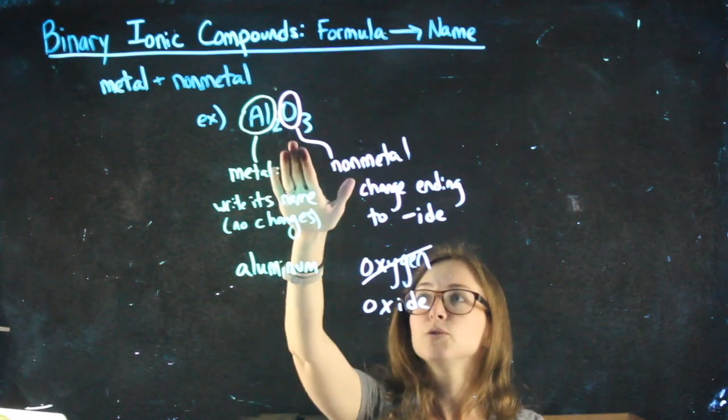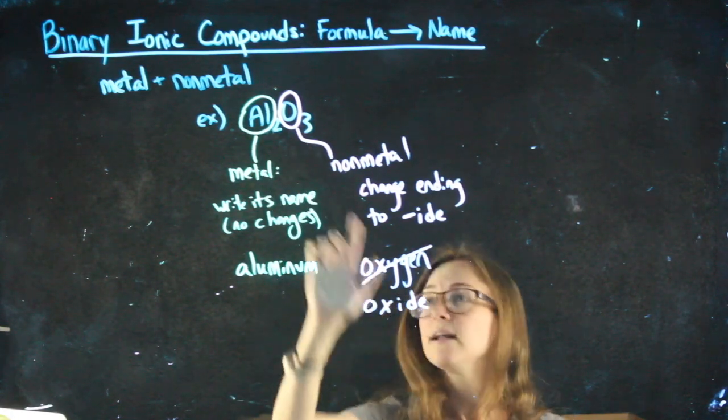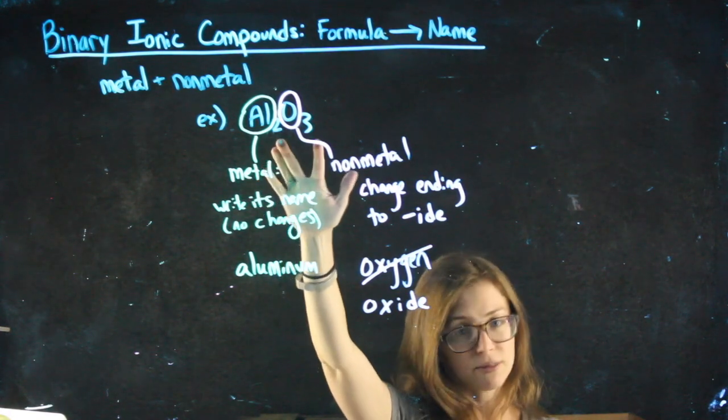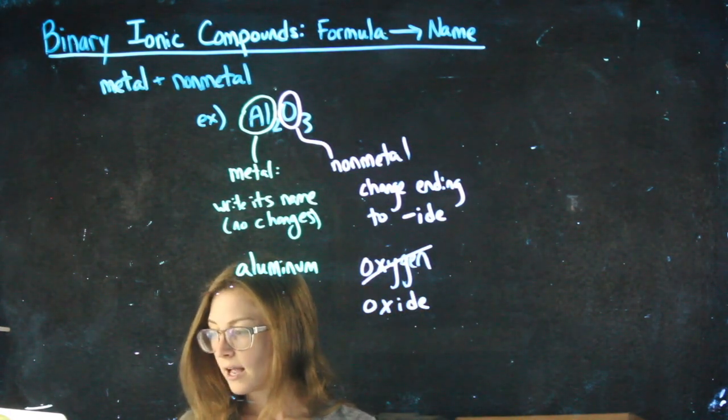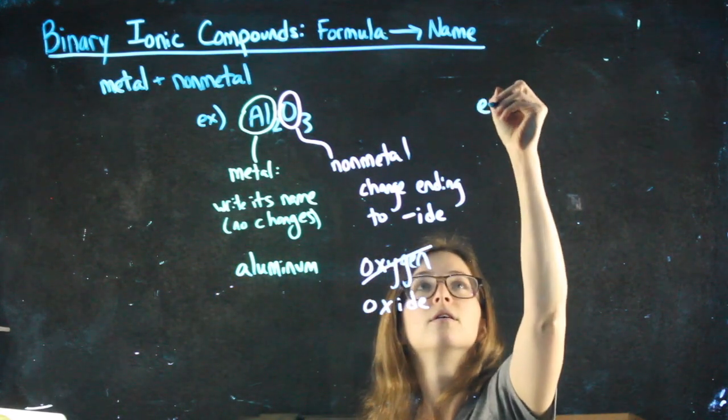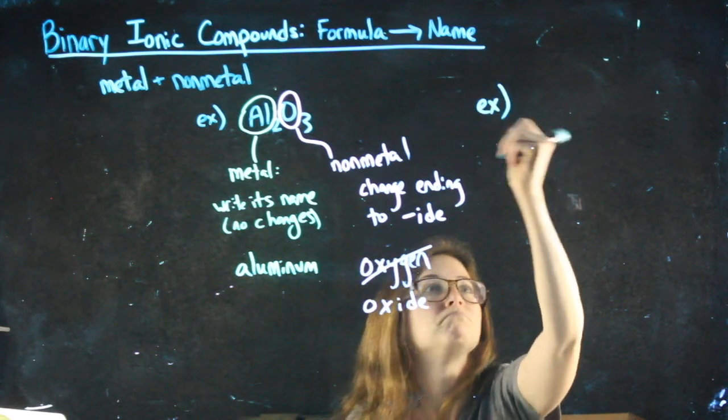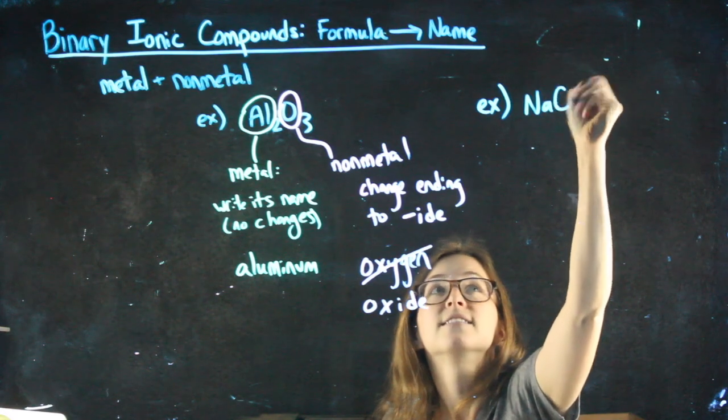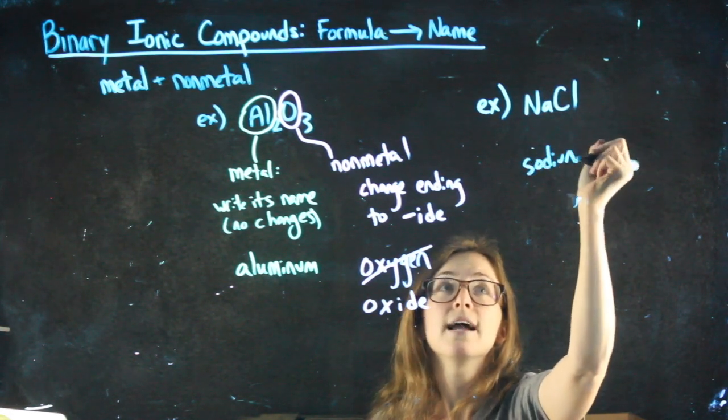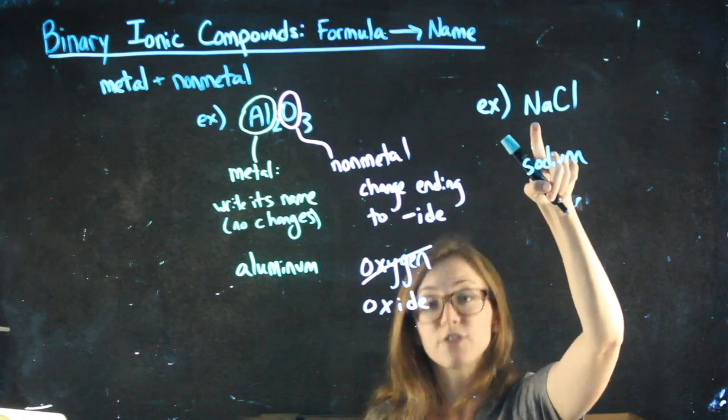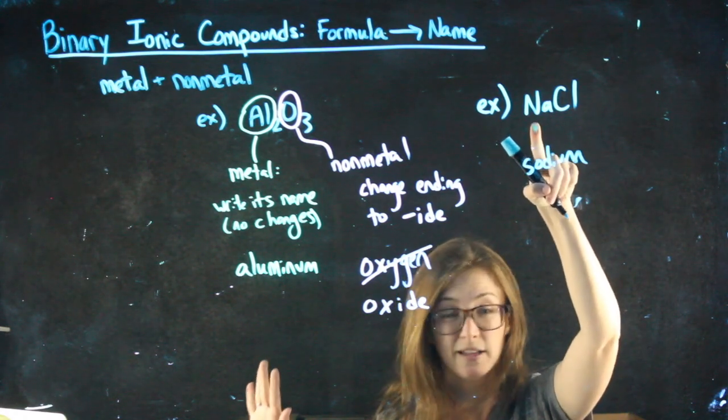Okay, so Al2O3 would just be called aluminum oxide. Nothing about the two, nothing about the three, and that's okay. Another example for you, NaCl. Na on the periodic table is sodium. It's the first element, it's a metal, so I don't do anything to its name.